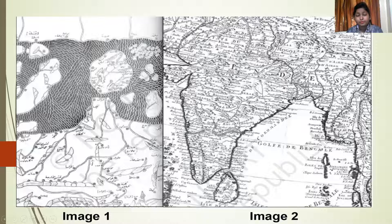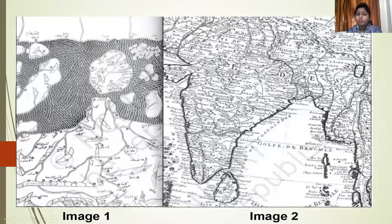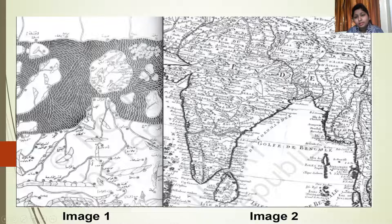So the differences between Map 1 and Map 2 are: first, the southern part of India is located in the northern part in Map 1, and vice versa, whereas in Map 2 north is north and south is south. Second, Map 1 was made by an Arab geographer named Al-Idrisi and Map 2 by a French cartographer. Third, the places in Map 1 are marked in Arabic, whereas in Map 2 they are marked in French.